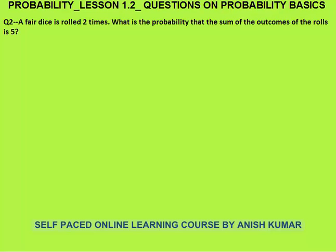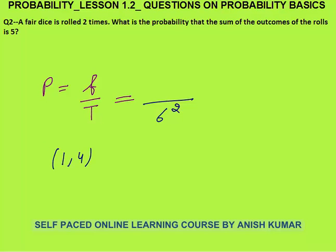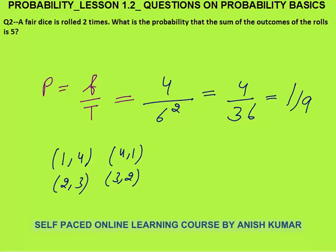Question two: a fair dice is rolled two times. What is the probability that the sum of the outcomes is five? Probability is favorable outcomes divided by total possible outcomes. Total possible outcomes when a dice is rolled two times is 6 squared, that is 36. Favorable cases are where the sum equals five: (1,4), (4,1), (2,3), (3,2) — these four cases. So the answer is 4 by 36, that is 1 by 9.